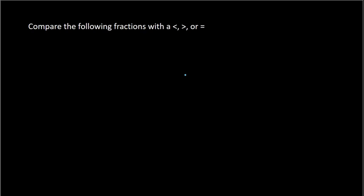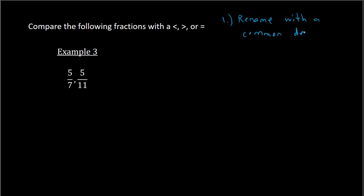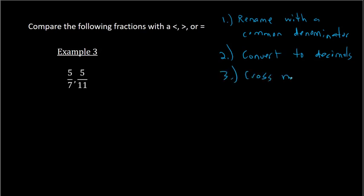Next we're going to work with comparing fractions. Example 3: we have 5/7 and 5/11. There are different ways we can compare fractions. One, we could rename with a common denominator. Another method is to convert to decimals. The third approach would be cross-multiplying. And the fourth way would be just using number sense — using your understanding of fractions to determine the answer.